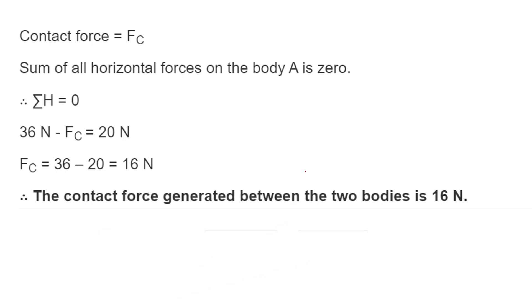The question asks for the contact force generated between the two bodies. We have calculated the force acting on the first block. The sum of all horizontal forces is zero by the equilibrium law. Hence, the force acting on the other body comes from the equation 36 N - Fc = 20 N.